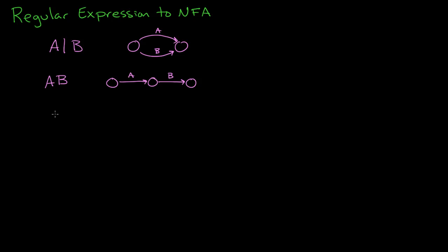And then finally, if you have the regular expression A star, that's done with four states. The A goes between the middle two, and then there are epsilons between the others. And these epsilon transitions allow you to represent zero or more A's.